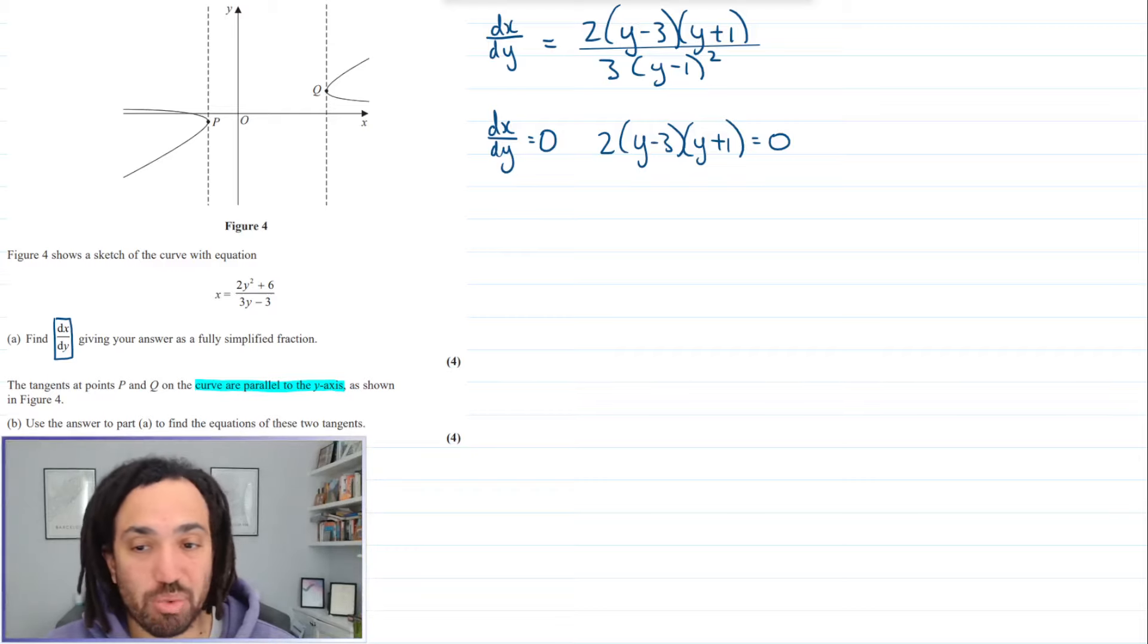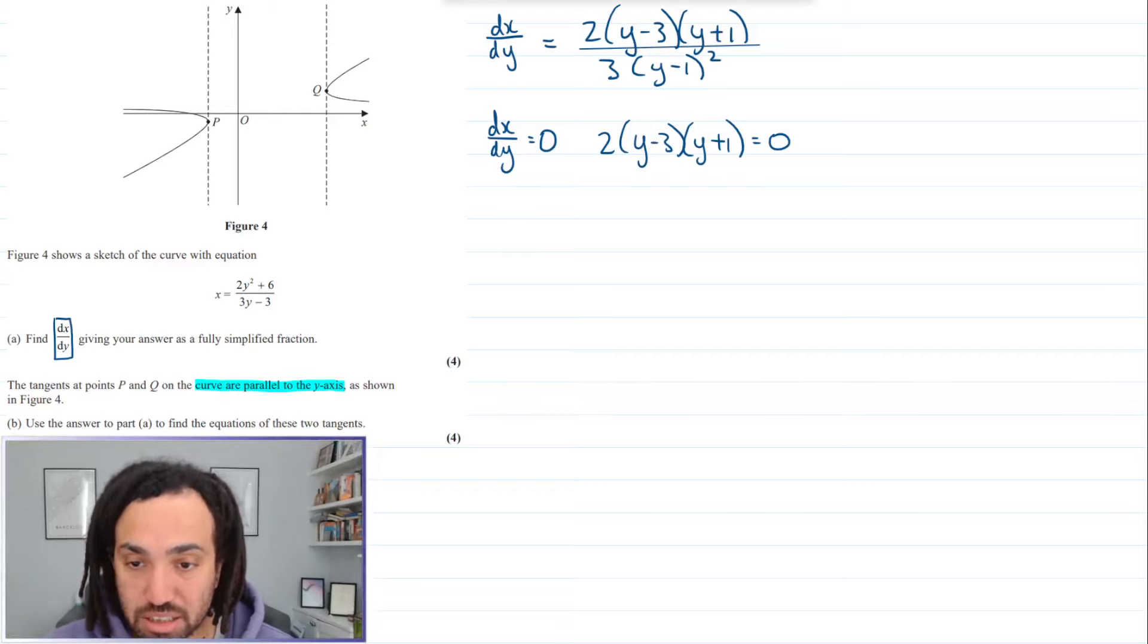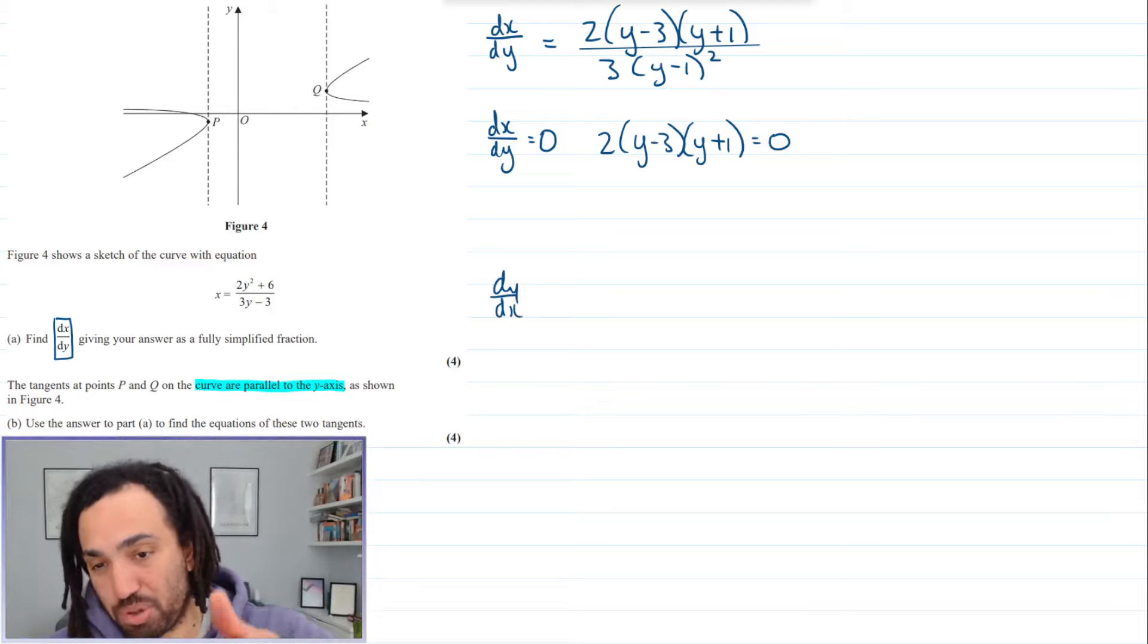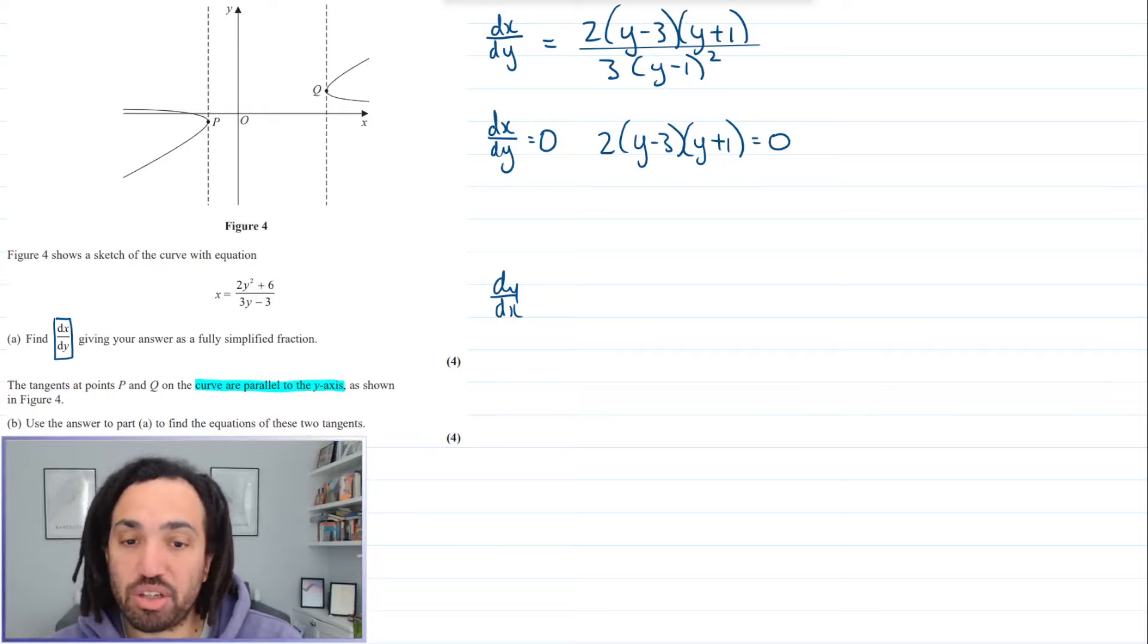Now a lot of the time, we actually have dy by dx. And when we do have dy by dx, we have to take the reciprocal and set that equal to zero if we are looking for parallel to the y axis.